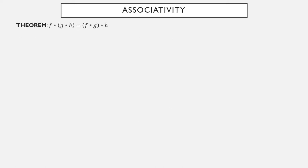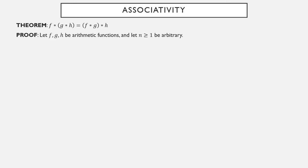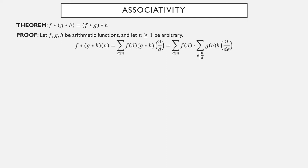Next up: associativity. Let's show that f convolved with g convolved with h is the same thing as f convolved with g convolved with h. Suppose f, g, and h are arbitrary arithmetic functions and n is an arbitrary positive integer. We just need to show that plugging n into the two functions — the one on the left and the one on the right — are always equal. Here is plugging n into the function on the left, and let's unpack this.